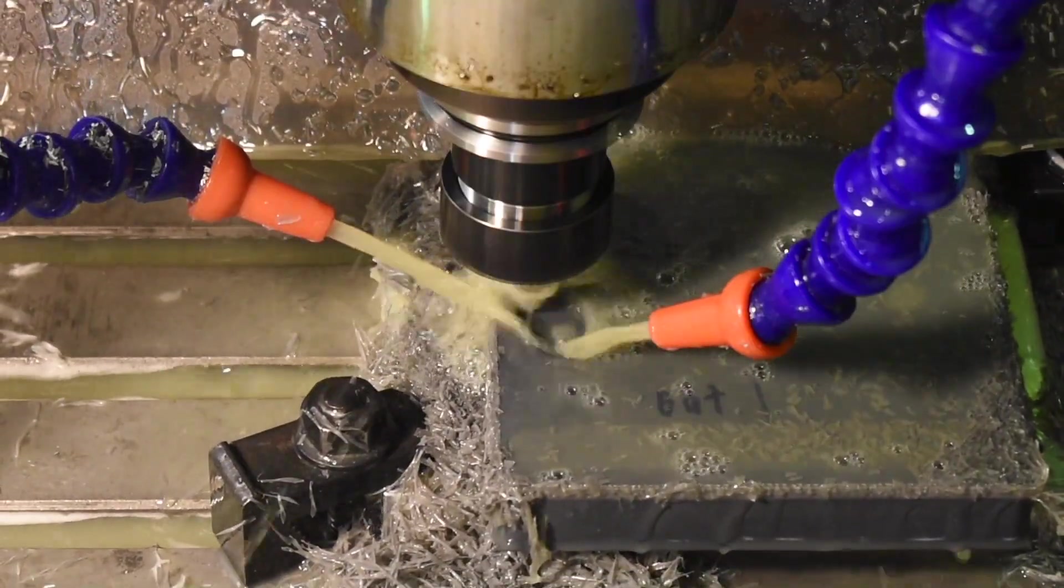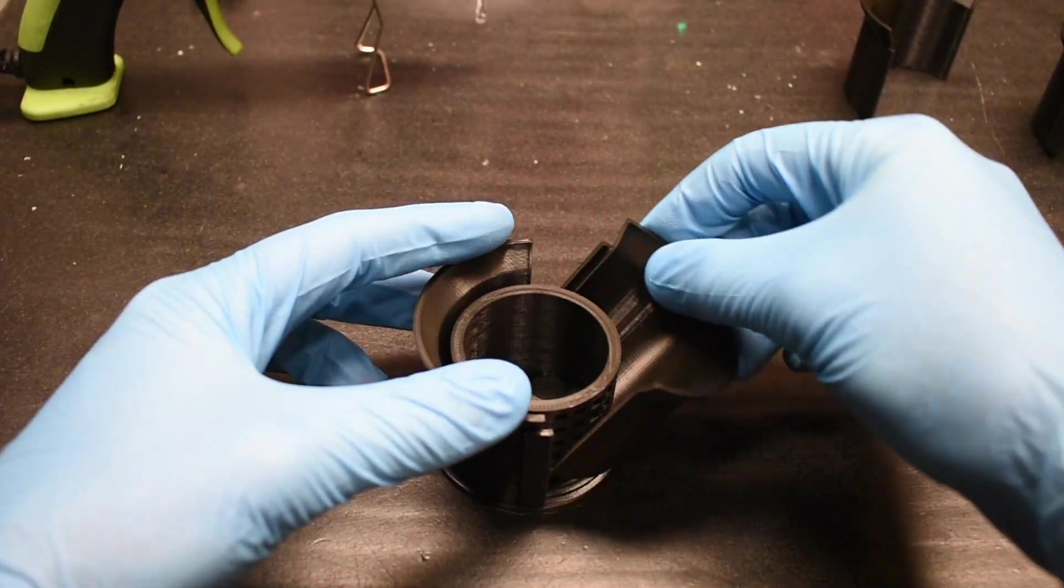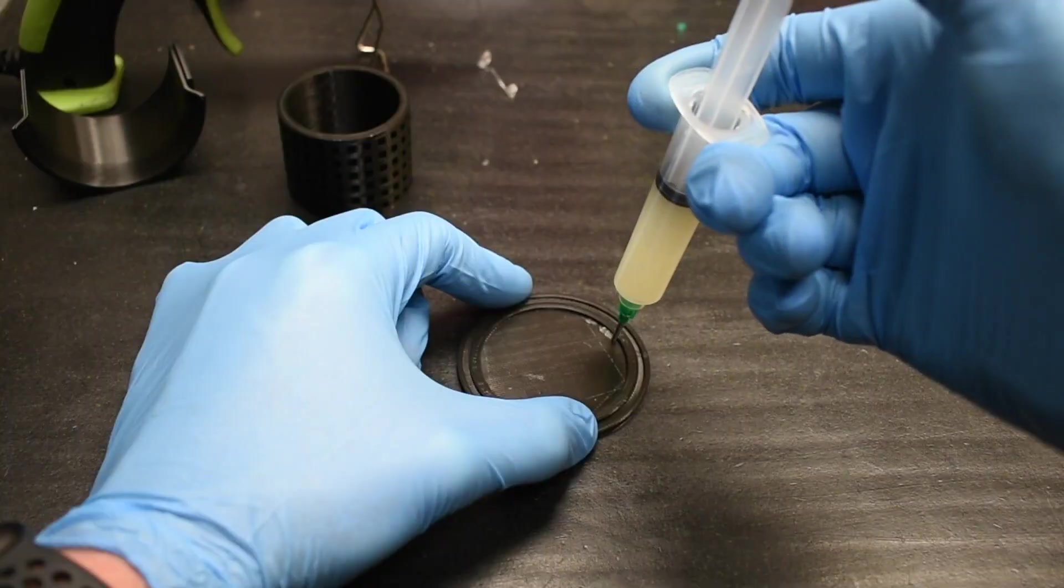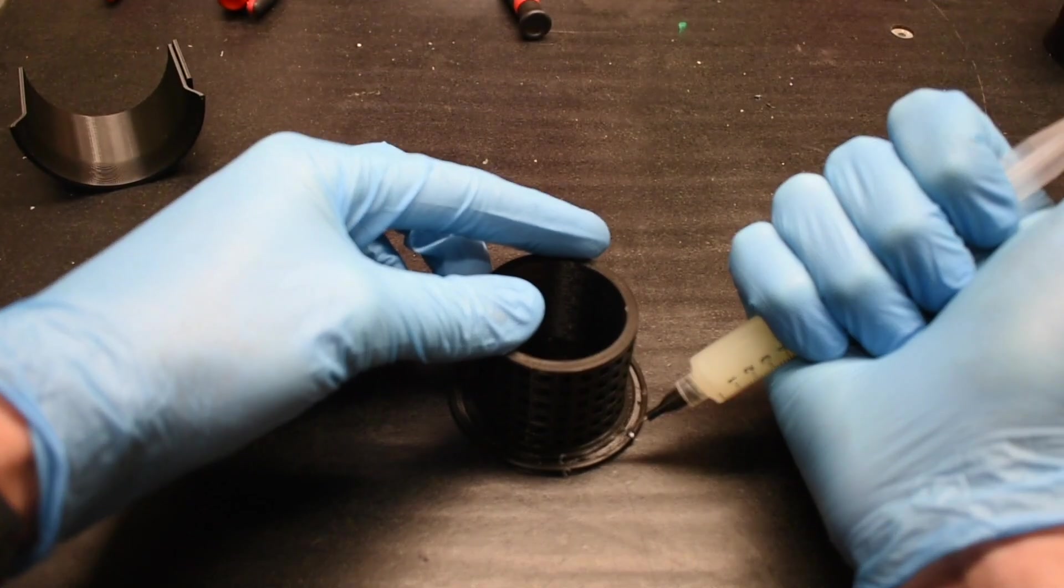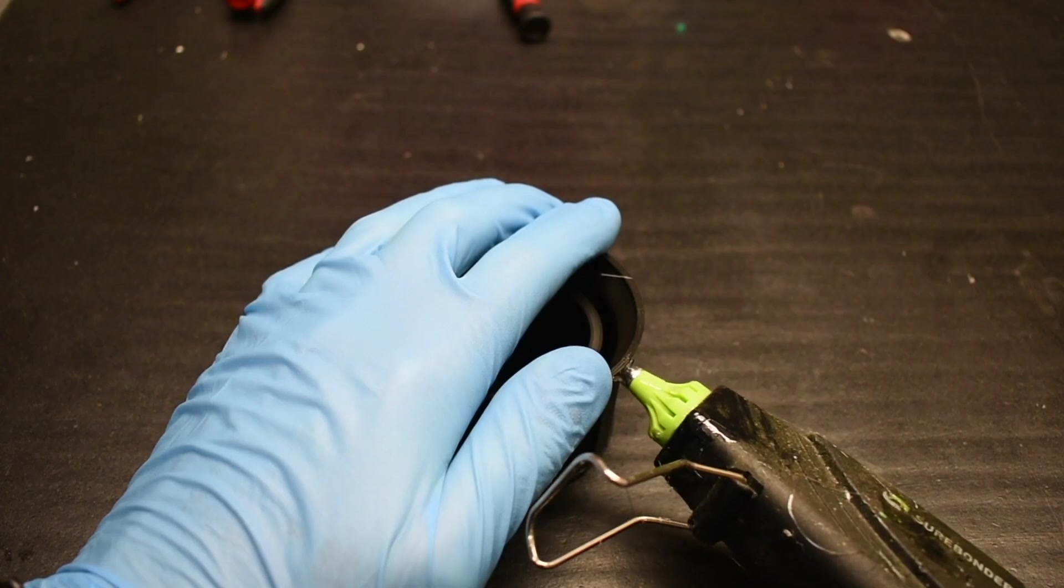Anyway, once all the machining was done, the tires were next. The rims and molds are 3D printed out of PLA, and I put some Vaseline around the sealing faces to keep any resin from seeping through, and then just use some hot glue to hold everything in place.